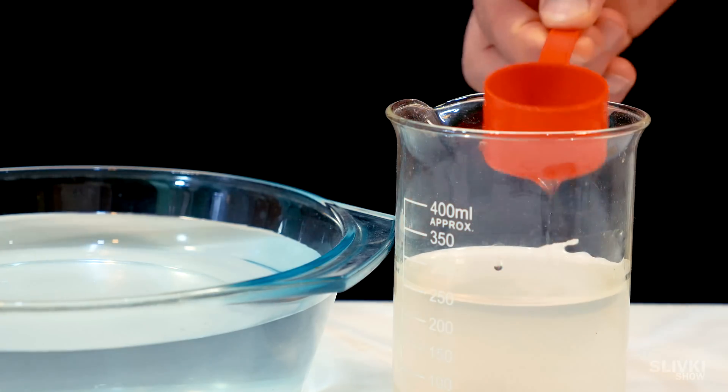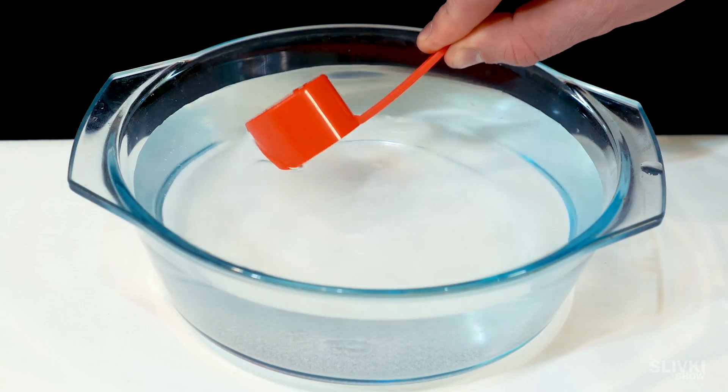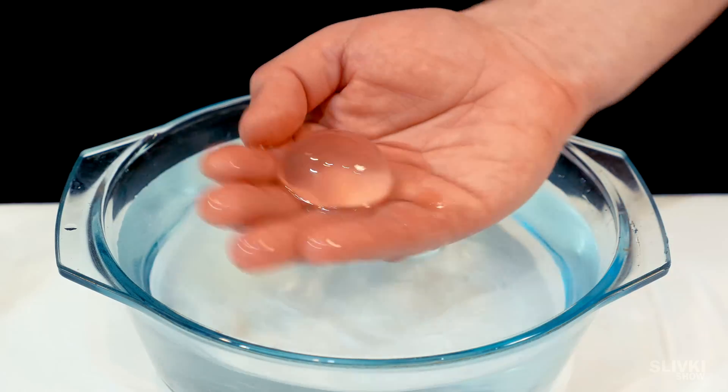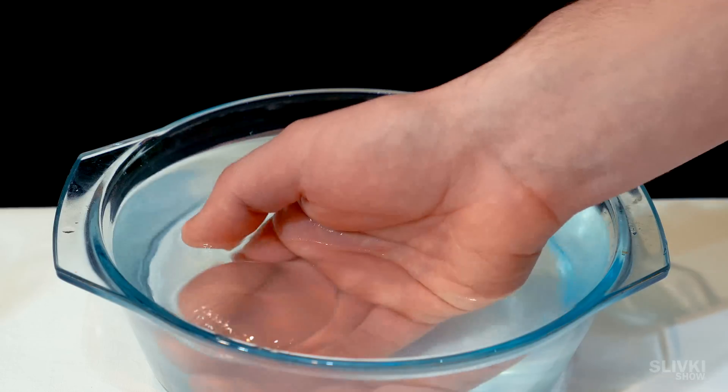When all mixtures are ready, grab with a deep spoon the mixture from a little can and carefully pour this mixture into the big one. Wait for 5 minutes and you can draw out a funny roly-poly or a big ball like this.